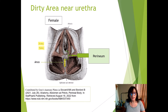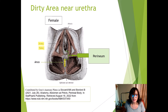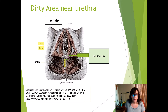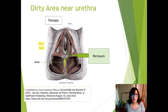This diagram of the urethra shows it is close to the vaginal opening and also very close to the anus. The perineum is the area between the vagina and the anus, and this can get contaminated with bacteria. This is why it is so important to wipe from front to back — from the front of the urethra towards the anus — to ensure that urine collected is a clean sample and that you don't contaminate your urethra. You should be given cleansing cloths to wipe before a midstream urinary sample is taken.